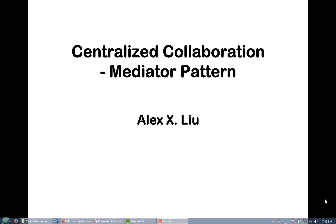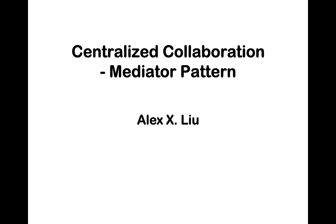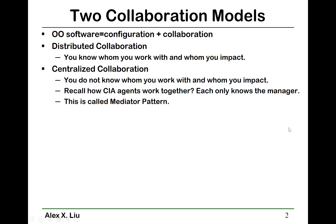Last lecture we learned distributed collaboration. Now in this lecture we are going to learn centralized collaboration, which is also called the mediator pattern. This is another design pattern. Object-oriented software is basically not equal to a sequence of code — it is equal to configuration plus collaboration. Configuration means we instantiate the objects and configure them so that they can collaborate, and collaboration means the objects send messages back and forth to work together to achieve some common goal.